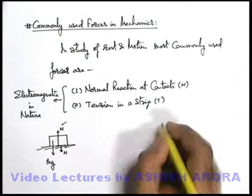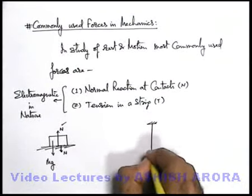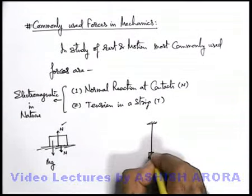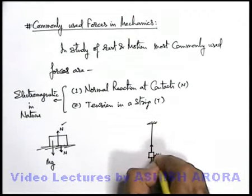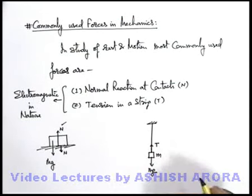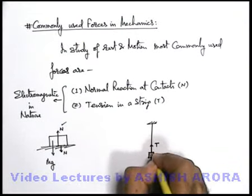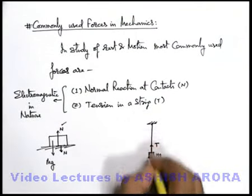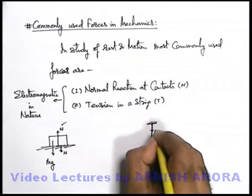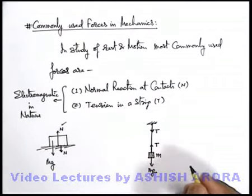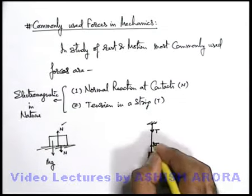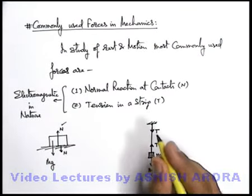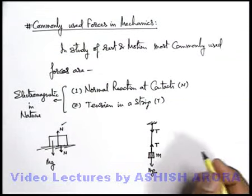Similarly, if a body is hanging from a ceiling with the help of a string, due to mg the string gets tight and applies an upward force T on the body to keep it at rest — this is the tension acting on the body. At the other point where the string is attached to the ceiling, the string also pulls that point downward, so tension acts there too. Wherever a string is in contact or tied, this tensile force acts due to the tightness of the string. We will discuss both of these forces in detail later.